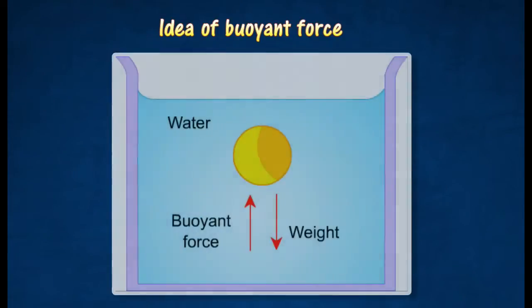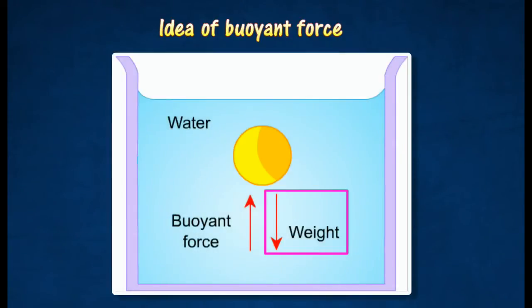An object immersed in water is subjected to two forces: the weight of the object which acts downwards, and an upthrust or buoyant force which acts upwards.